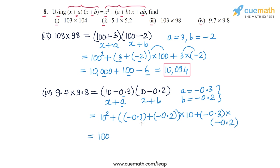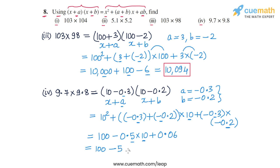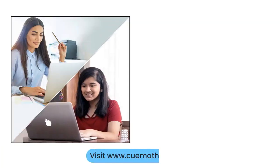So 10² = 100, then −0.3 + (−0.2) = −0.5, and −0.5 × 10 = −5, and (−0.3) × (−0.2) = +0.06. So we get 100 − 5 + 0.06 = 95.06. This is the product for part 4. With this, we have completed all four parts of question 8.